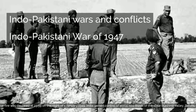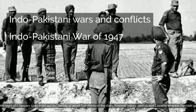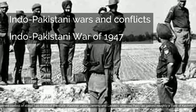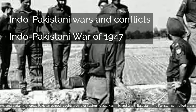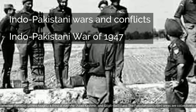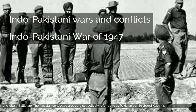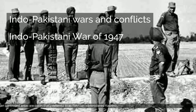India gained control of about two-thirds of the state — Kashmir Valley, Jammu, and Ladakh — whereas Pakistan gained roughly a third of Kashmir, Azad Kashmir and Gilgit-Baltistan. The Pakistan-controlled areas are collectively referred to as Pakistan-administered Kashmir.